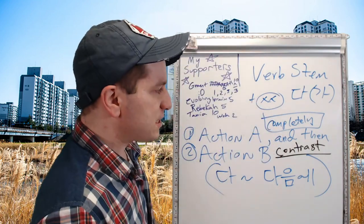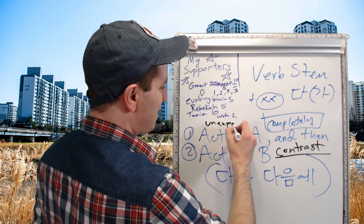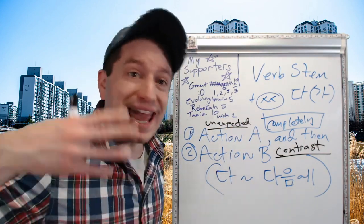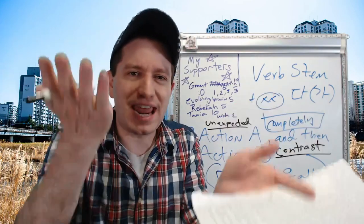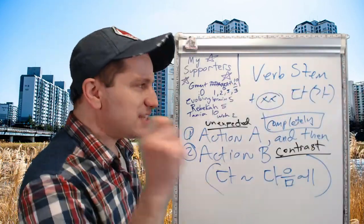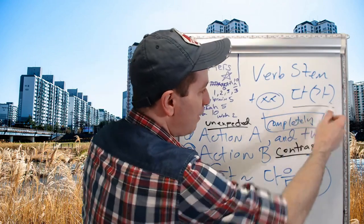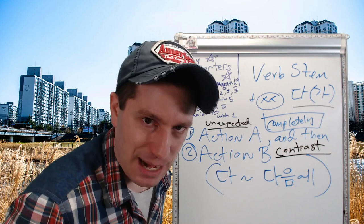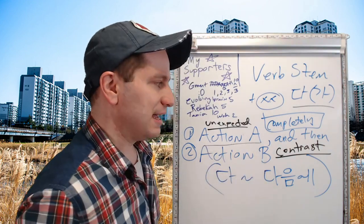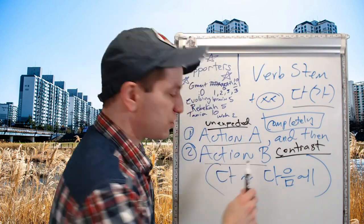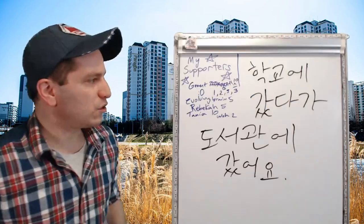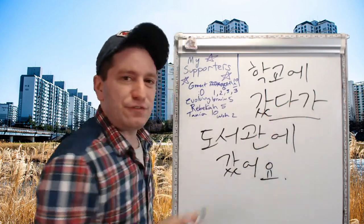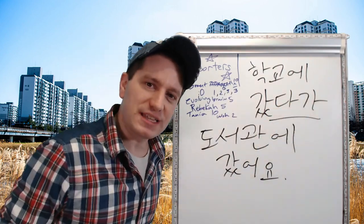This form is used to show contrast between action A and action B. Often this contrast will be something unexpected, but it doesn't have to be — contrast doesn't necessarily mean 'but' all the time; there's also 'and.' It's just to compare two things, to show contrast between them. Just like the regular 다가 form, both subjects must be the same — I did action A and then I did action B. 학교에 갔다가 도서관에 갔어요.